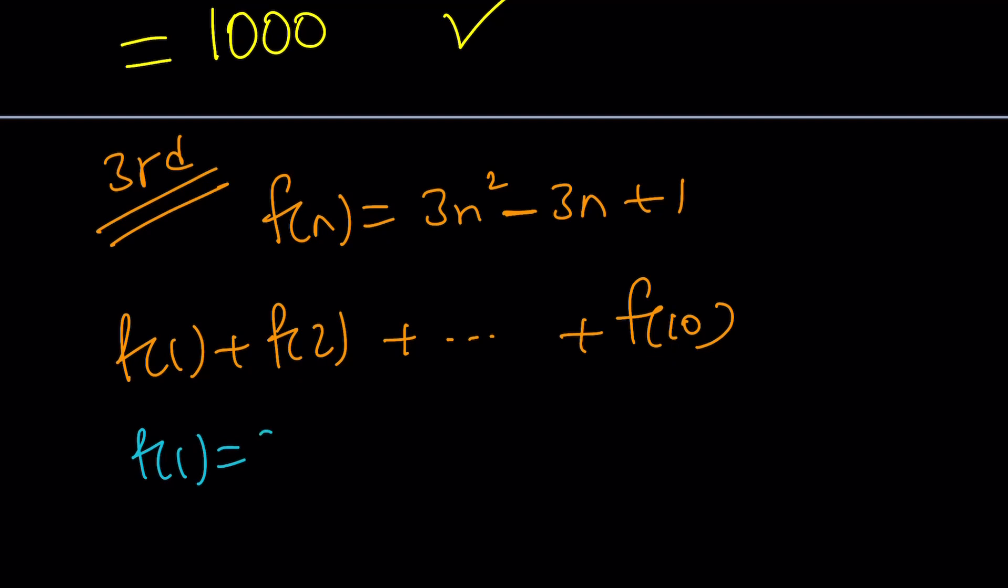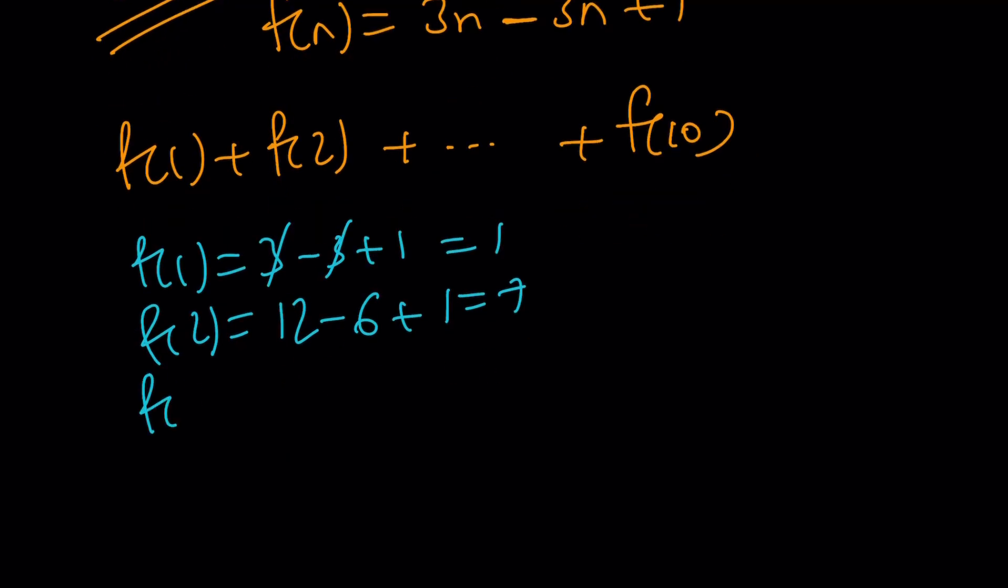f of 1 is equal to 3 minus 3 plus 1. That will be 1. f of 2 would be 3 times 4, which is 12, minus 3 times 2, 6 plus 1. That will be a 7. And then f of 3, see if you can see a pattern here. 3 times 9, that's going to be 27, minus 3 times 3 is going to be a 9 plus 1. That's 19. Do you see a pattern? It goes up by 6 and then by 12. You get the idea? f of 4 is just going to be 4 squared, 16, 48, minus 3 times 4 is equal to 12, plus 1. That's going to be 37.